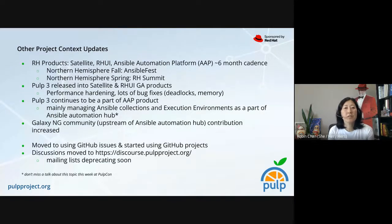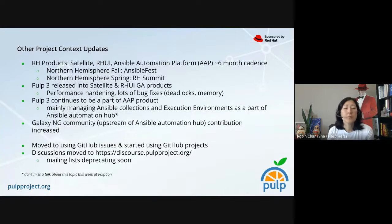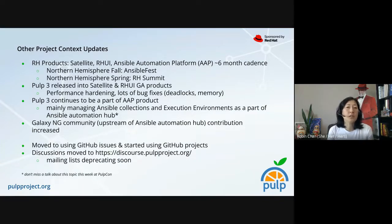I wanted to give a little more context around some of the things shaping our efforts before we dive into the technology part, which Tanya will help us go through. Our Red Hat product releases using Pulp are Satellite, Rui, and Ansible Automation Platform, and these products are roughly doing a six-month cadence. The Northern Hemisphere Fall is when AnsibleFest is, and the spring is when Red Hat Summit is. These really drive a lot of the releases for the products and some of the larger features that are done for those products.